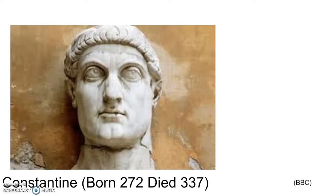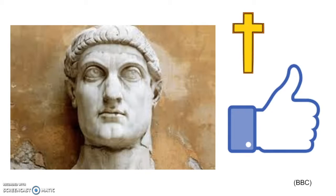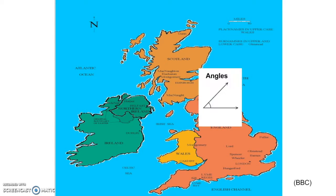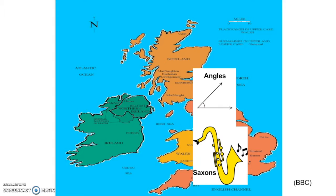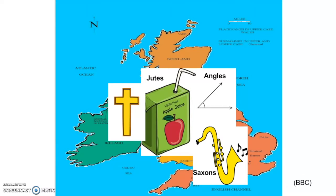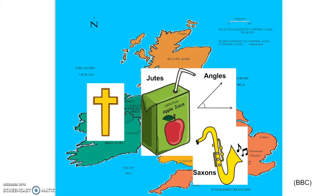Christianity was eventually adopted by the Roman Emperor Constantine, who made rules for the tolerance of Christianity in 313 AD. Christianity had originally become more visible and prominent in Britain during the 4th century, but paganism was still what most people practiced. Soon after, there were invasions by Angles, Saxons, and Jutes, and Christianity ended up getting pushed to the western edges of Britain.